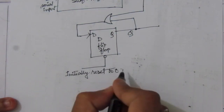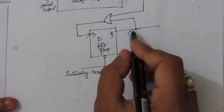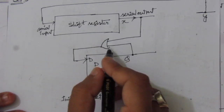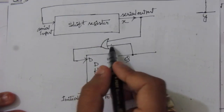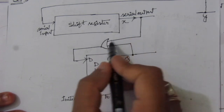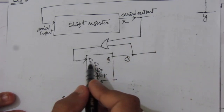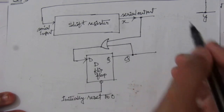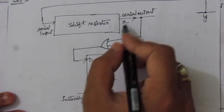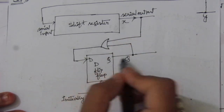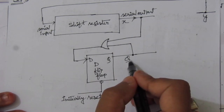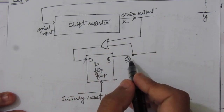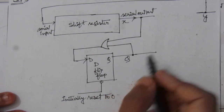The Q output is initially reset to zero. That means initially Q is equal to zero. Whatever data is present, the D input will follow that data. So if x is zero, D will be zero and the next step output will also be zero. If x is one, D will be one and at the next step Q will also have the value one.